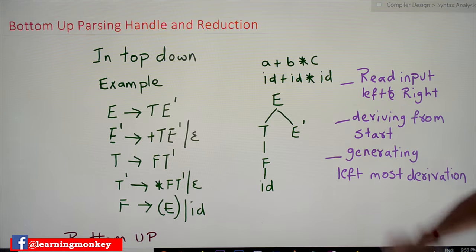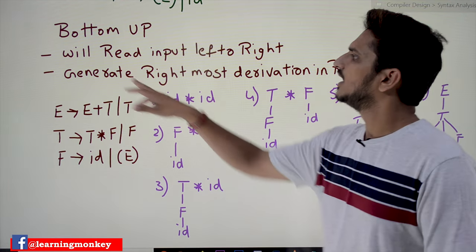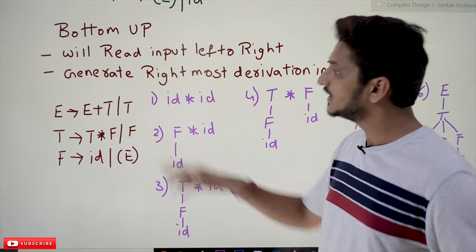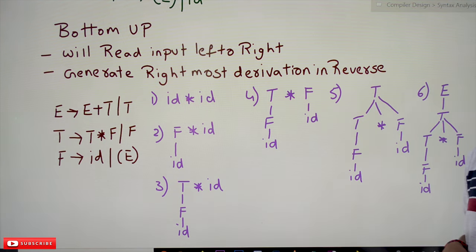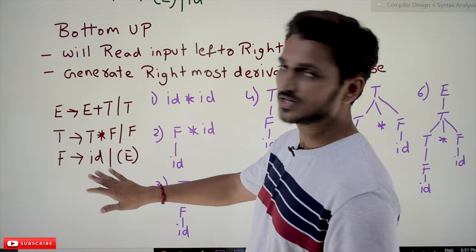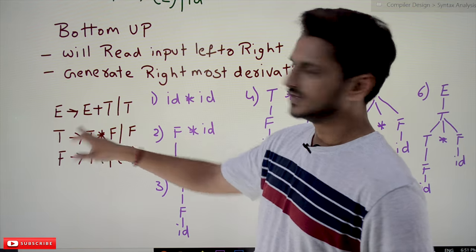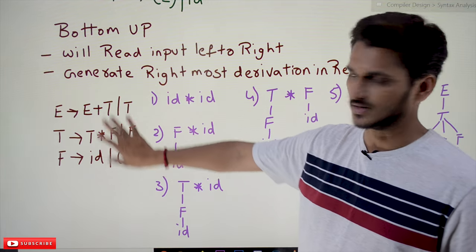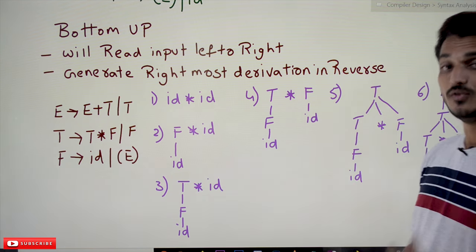Coming to bottom-up parsing — what will it do? It will read the input from left to right, but it is going to generate the rightmost derivation in reverse. This is the example grammar we are using to identify expressions that consist of plus and multiplication symbols: E → E plus T | T, T → T star F | F, F → id | (E). These grammars were already discussed in our previous classes.